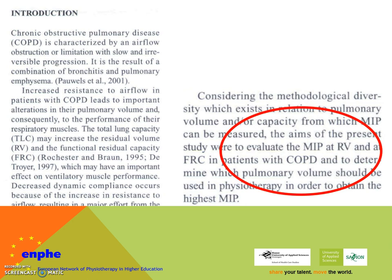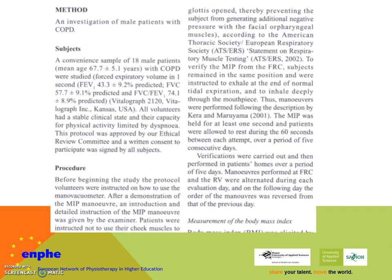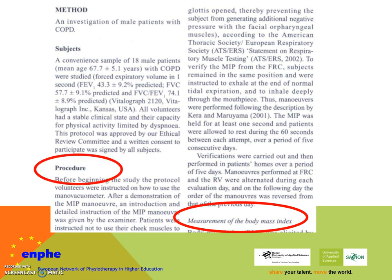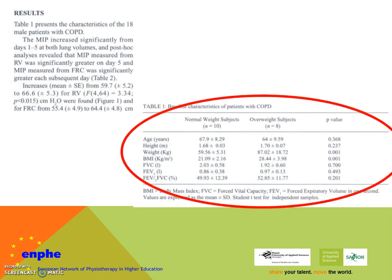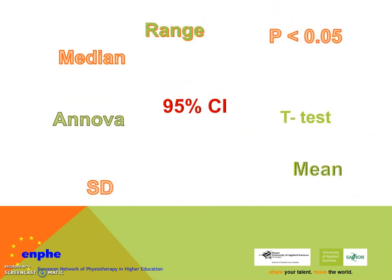The introduction is where you can find the reasons for doing the research, including the objectives and the research question. The methods section describes the how and the what — for example, what they did with a group of patients and what they used to measure the outcomes. Then the results: here you find the numbers related to the measurements performed on the patients, usually presented in figures and tables, and also described in text — including those ugly statistics that students love to hate.